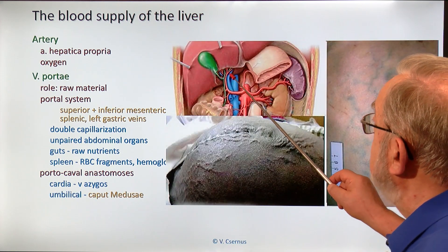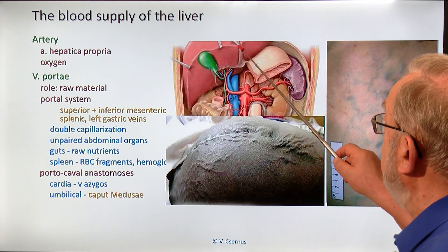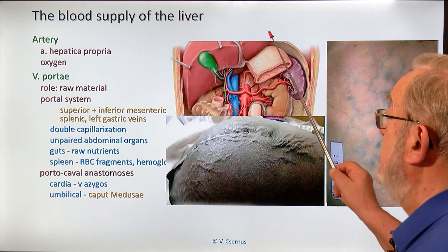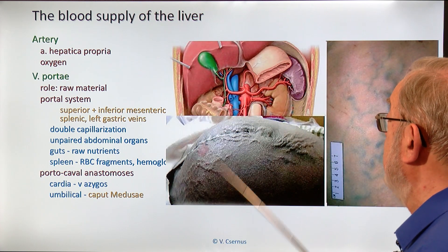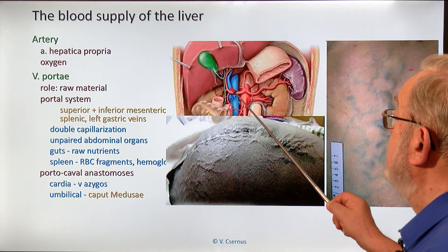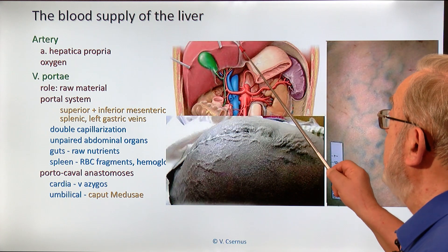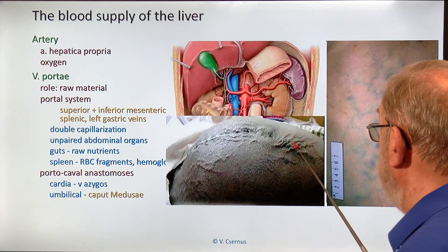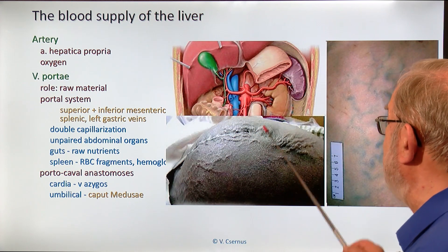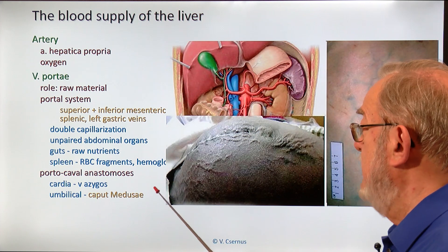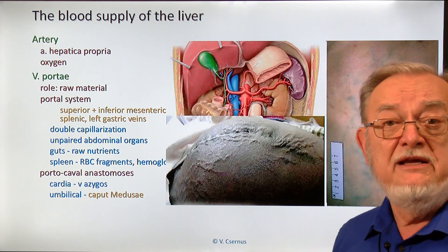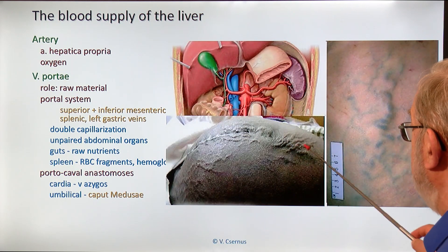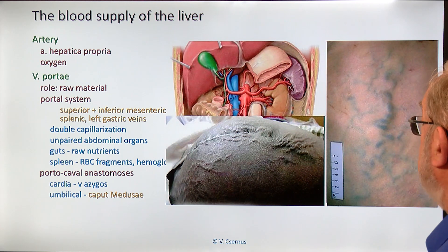The second anastomosis is around the umbilicus. The round ligament of the liver contains the remnant of the umbilical vein, which has a small lumen. As liver cirrhosis develops gradually, increasing portal pressure opens and enlarges this umbilical vein, which communicates with the abdominal venous system. The abdominal veins become engorged and appear like snakes on the abdomen — this is why it has the romantic name caput medusae, the head of Medusa. In Greek mythology, Medusa's hair was transformed into snakes, and this truly resembles snake-transformed hair.